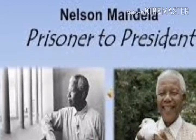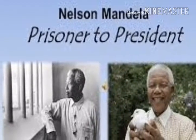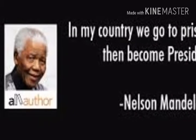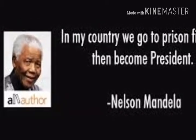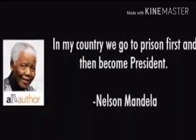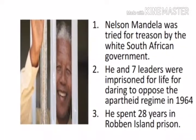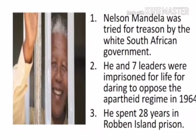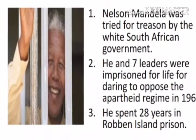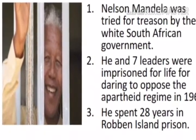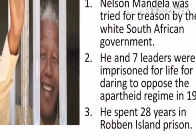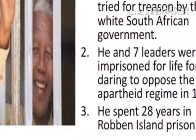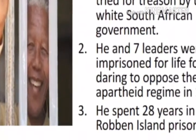On 26 April 1994, the Republic of South Africa came into existence. The apartheid rule came to an end, paving the way for the formation of a multiracial government. Nelson Mandela had been tried for treason by the white South African government. He and seven other leaders were sentenced to life imprisonment in 1964 for daring to oppose apartheid. He spent the next 28 years in South Africa's most dreaded prison, Robben Island.